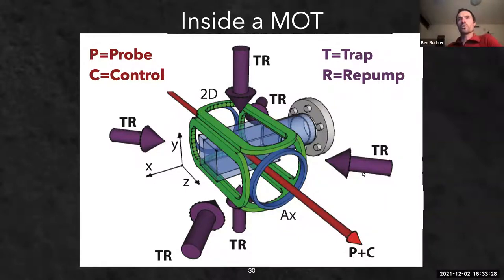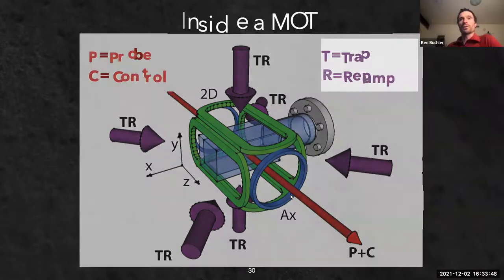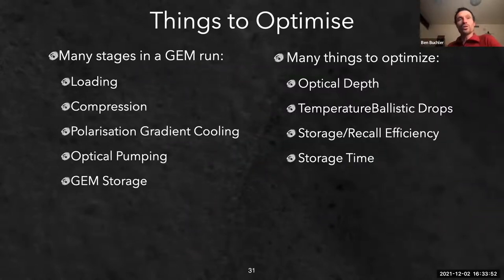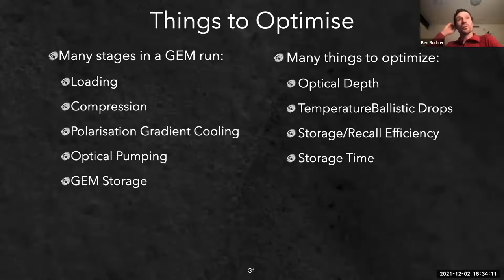Magneto-optic traps have been around a long time but optimizing them is a very hard problem - you have billions of atoms all interacting, and writing down the billion equations is not tractable numerically. For years people have done it intuitively. The optimization problem is: how do you choose the best parameters for tuning magnetic fields, trapping beams, and re-pumping beams to maximize trapped atom number, minimize temperature, and minimize the volume?